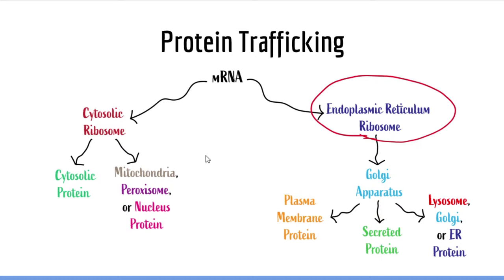Regardless of their final destination, these proteins must always pass through the Golgi apparatus. Even proteins that are destined to stay in the endoplasmic reticulum must first go to the Golgi and then be sent back from the Golgi to the endoplasmic reticulum. The Golgi serves as the distribution center for vesicle-mediated trafficking.